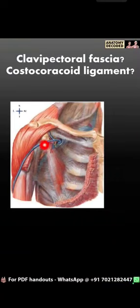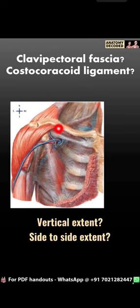Clavipectoral fascia is a deep fascia in the region of the axilla, lying deep to the pectoralis major muscle. Let's learn about its vertical and side-to-side extent.